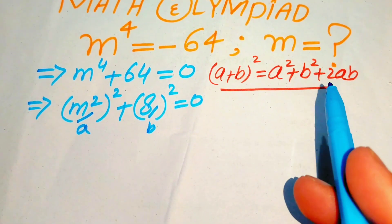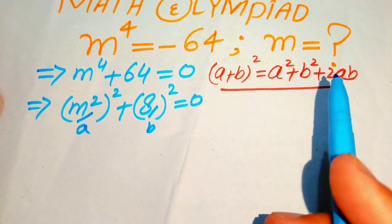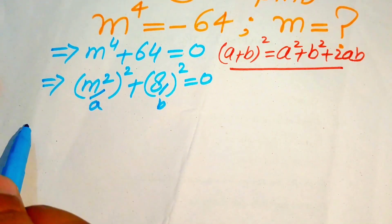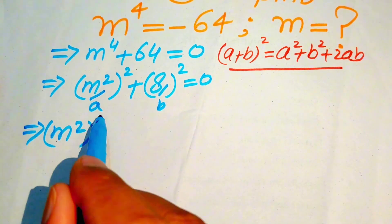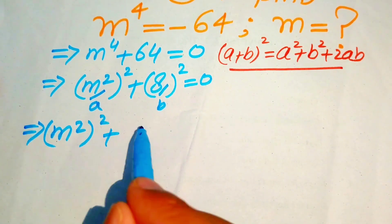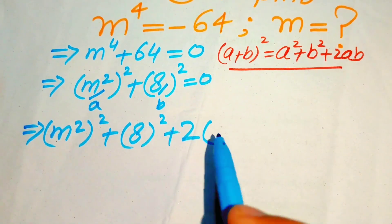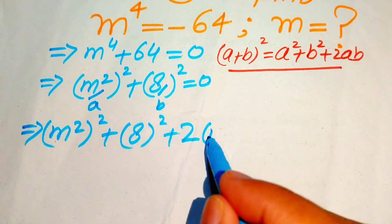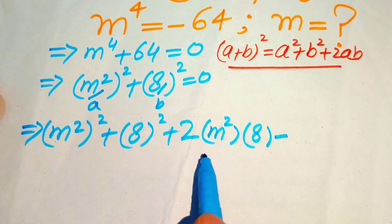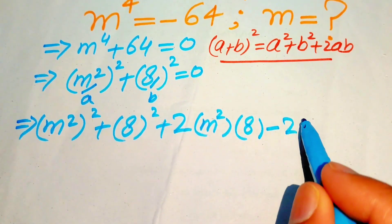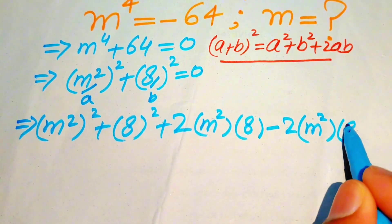We need the term 2 times ab, so we add and subtract this term. We rewrite the equation as (m squared) whole squared plus 8 squared plus 2 times m squared times 8, and then subtract 2 times m squared times 8.